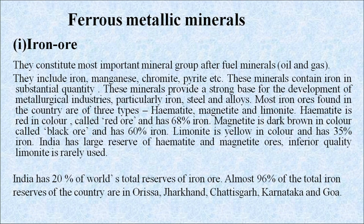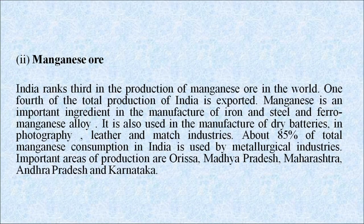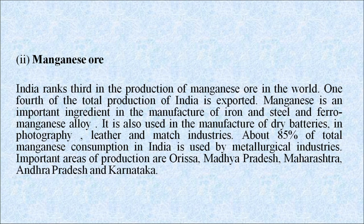India has large reserves of hematite and magnetite ores. India has 20% of the world's total reserve of iron ore. Almost 96% of total iron reserves of the country are in Odisha, Jharkhand, Chhattisgarh, Karnataka and Goa. Second is manganese ore. India ranks third in the production of manganese ore in the world. One-fourth of the total production of India is exported. Manganese is an important ingredient in the manufacture of iron and steel and ferro-manganese alloy. It is also used in manufacture of dry batteries, photography, leather and match industries. About 85% of total manganese consumption in India is used by metallurgical industries. Important areas of production are Odisha, Madhya Pradesh, Maharashtra, Andhra Pradesh and Karnataka.